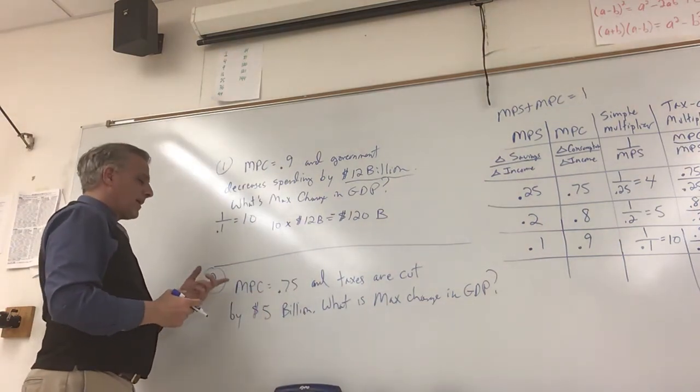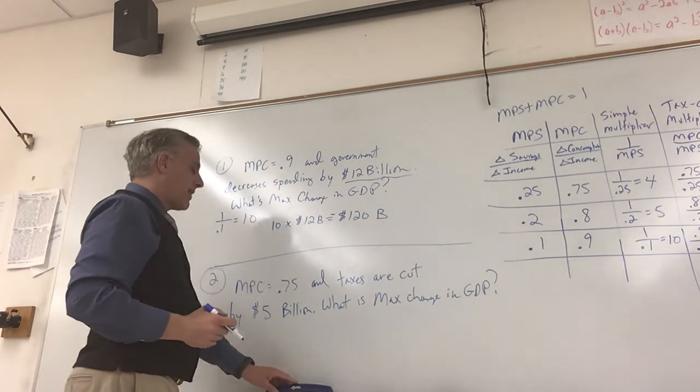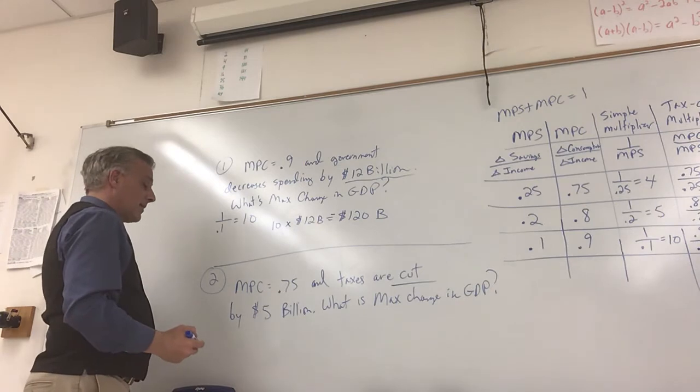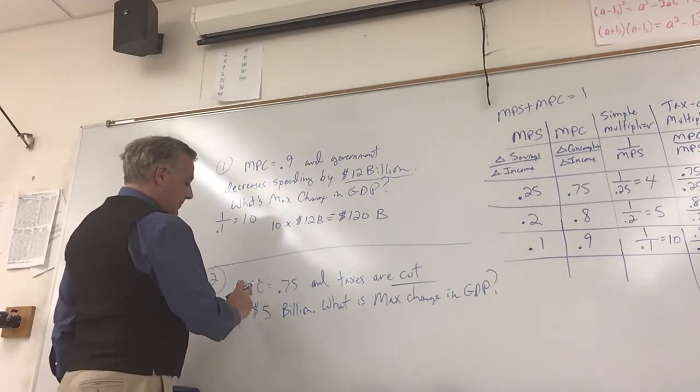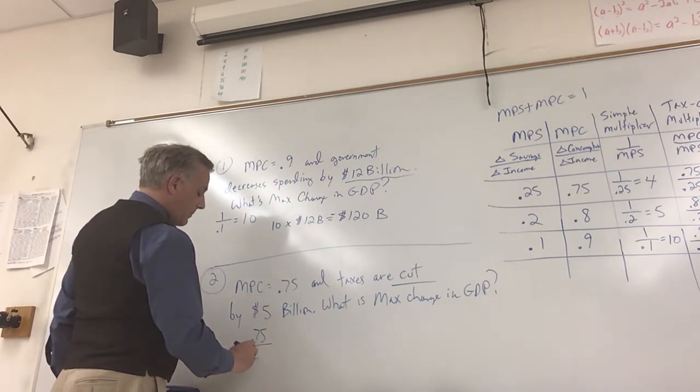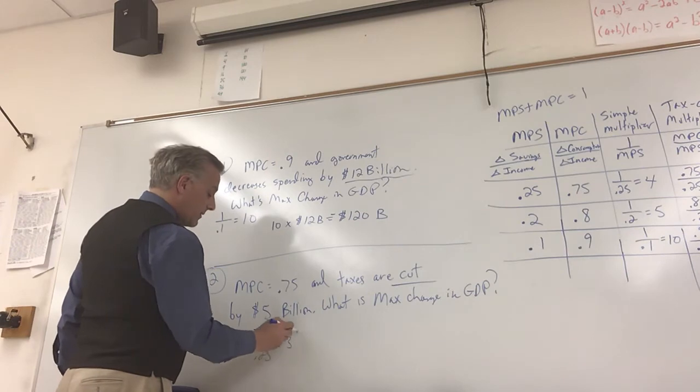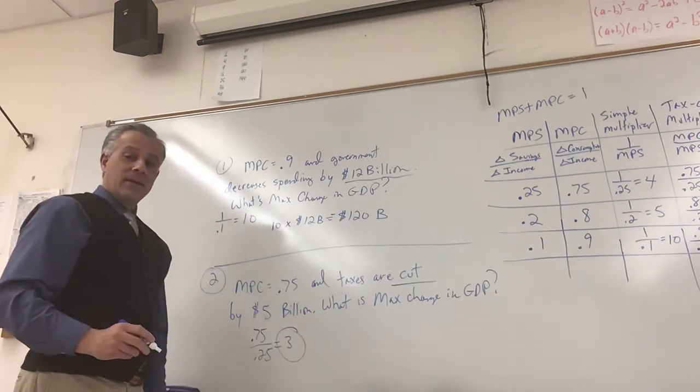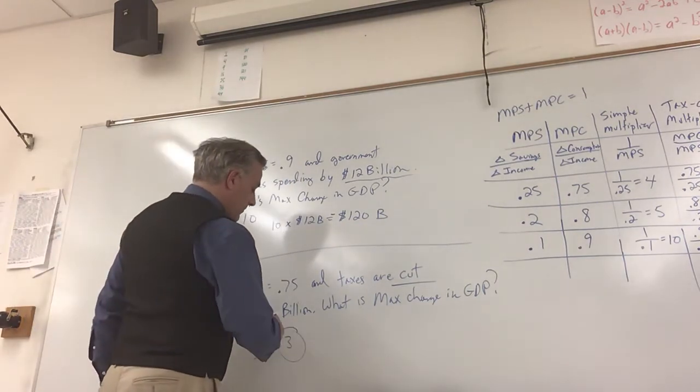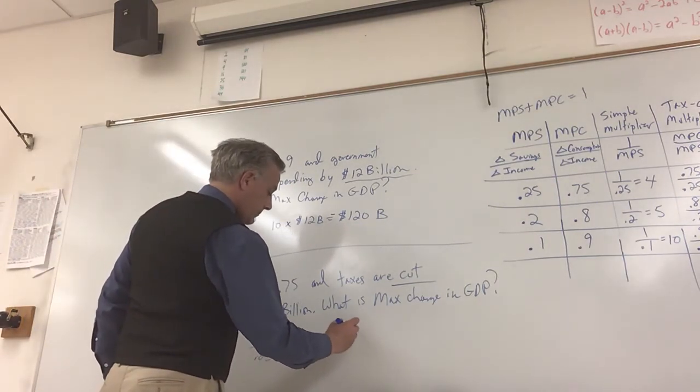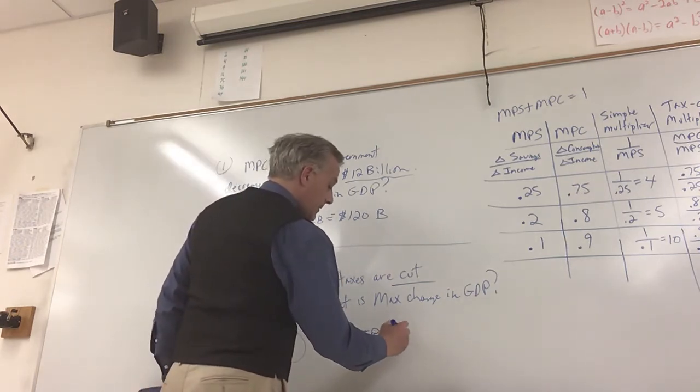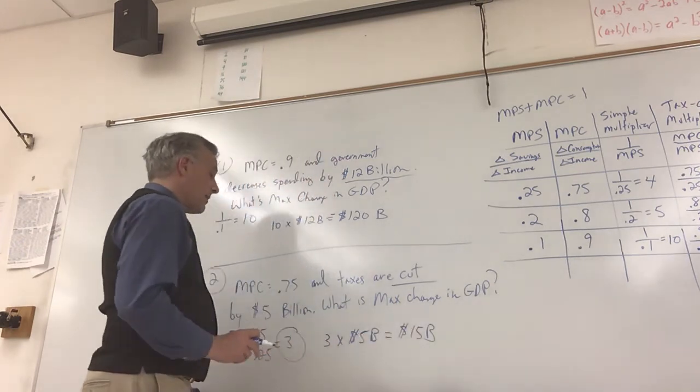All right, let's take a look at number two. If the MPC is 0.75 and taxes are cut by 5 billion dollars, so there's a tax decrease, taxes are cut. Well, my tax cut multiplier is calculated differently. That's 0.75 over 0.25, which is 3. So that's my tax cut multiplier. What do I do with my multiplier? I multiply them. So 3 times 5 billion is going to be a maximum change in GDP of 15 billion dollars.